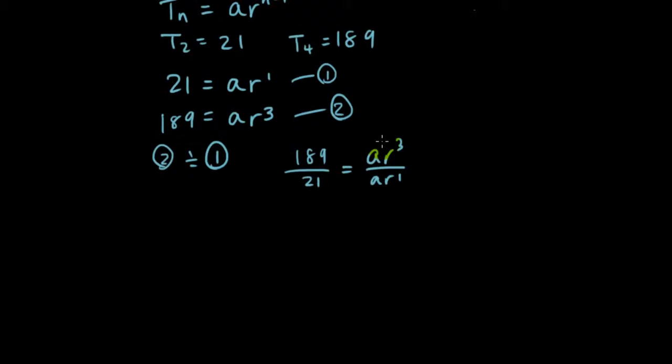So the A's cancel out, cancel down to 1. A divided by A is 1, so I have R squared on the right-hand side, because R to the power of 3 divided by R to the power of 1 is R to the power of 2. 3 minus 1 is 2.